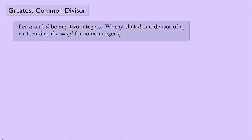Recall the definition of a divisor. Let A and D be any two integers, and we say that D is a divisor of A, written as D with a bar and then A, if A equals QD for some integer Q. So for example, we know that 3 divides 21 because 21 equals 7 times 3.